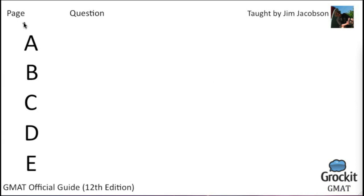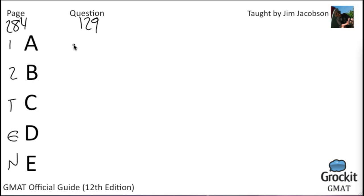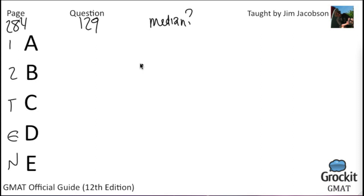Interesting start to the questions on page 284. Question 129: what is the median number of employees assigned per project for the projects at company Z? Remember, with an odd number of values the median is the exact middle one, and with an even number the median is the average of the middle two. To find the median we basically need the numbers in the set.